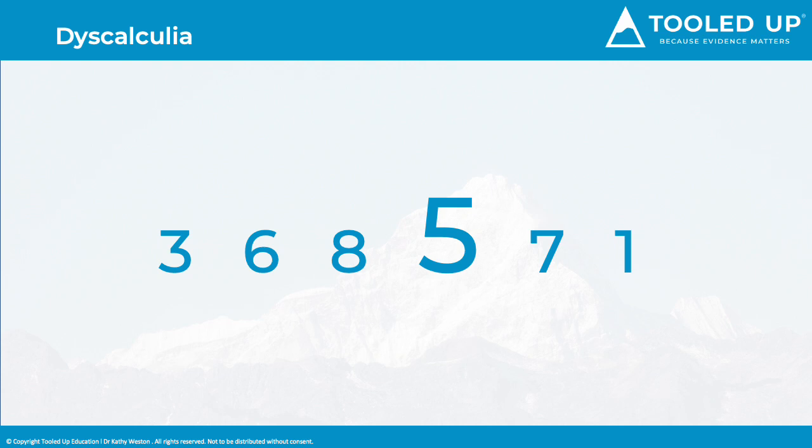Dyslexic difficulty with maths is different to dyscalculia but it can co-occur. Dyscalculia has different diagnostic criteria and presents as a specific difficulty with the understanding of number.